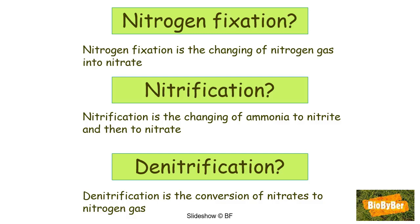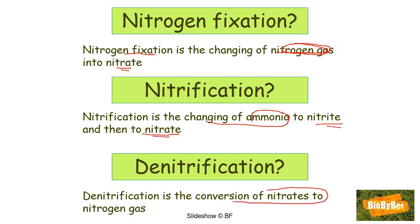There are a number of key terms associated with the nitrogen cycle. Nitrogen fixation is the changing of nitrogen gas in the atmosphere into nitrates, which are useful. Nitrification is the changing of ammonia into nitrite first, and then into nitrate. Denitrification is the opposite — the conversion of nitrates back into nitrogen gas. If you are able for a bit more, you should take these definitions on board.